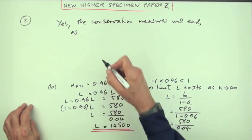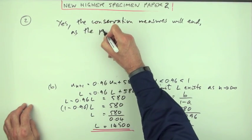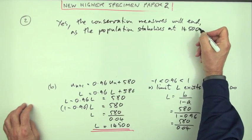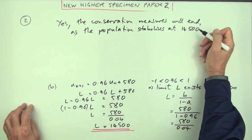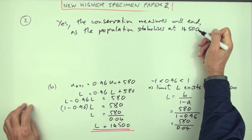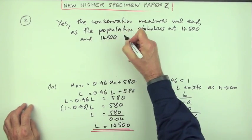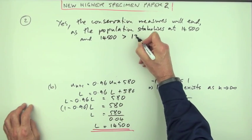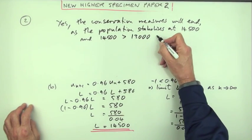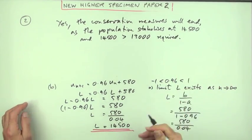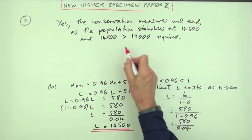Now I've got to justify that numerically. As the population stabilizes at 14,500. And that's still not enough. I've still got to justify why that's acceptable. And 14,500 is greater than the 13,000 required. And that's still not enough. There we go.